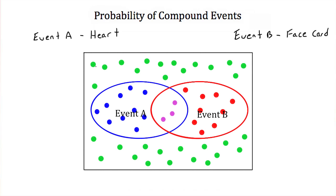If you counted up every dot in this Venn diagram — the green ones, the blue ones, the red ones, and the purple ones — you would find that there are 52 dots in this Venn diagram. Each one represents one card in a deck of 52 cards.